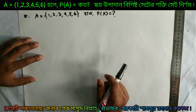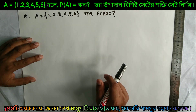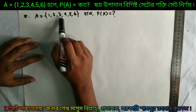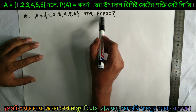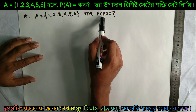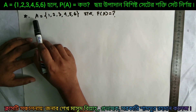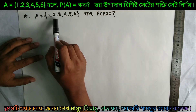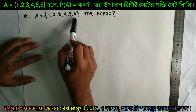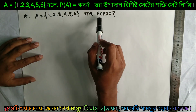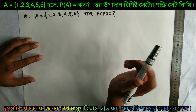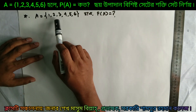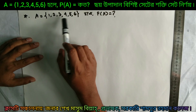Hello everyone, welcome to today's class. Today we are going to show you the set {1, 2, 3, 4, 5, 6}. The set has 100 elements — the set of a set is 100.